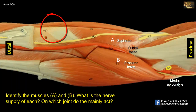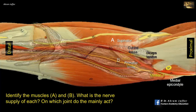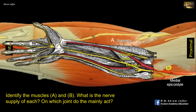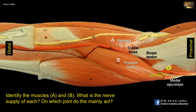The pronator teres passes across the forearm to be inserted into the lateral surface of the radius near its middle. The median nerve, shown here in the cubital fossa lying medial to the tendon of biceps, passes between the two heads of origin of pronator teres and supplies the muscle while doing so. As their names indicate, the pronator teres pronates the forearm while the supinator supinates the forearm.